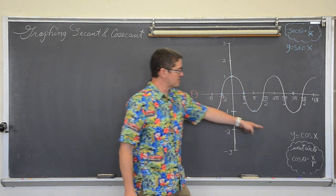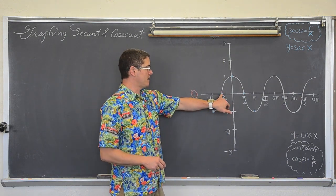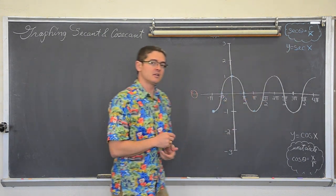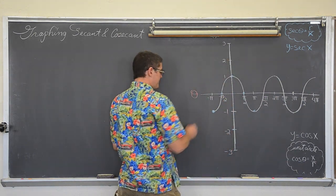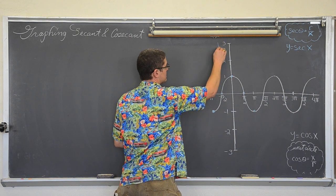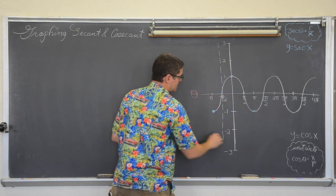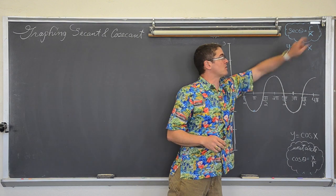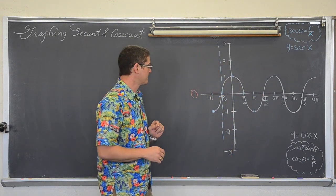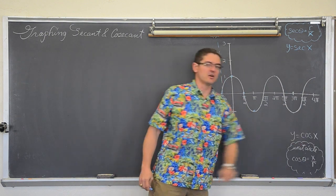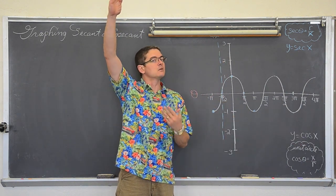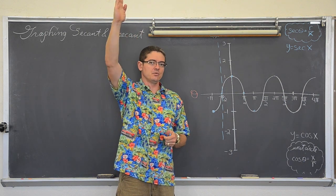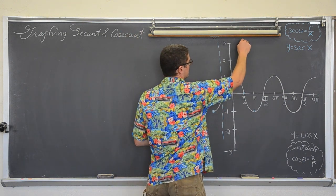There is no vertical shift here — this is the parent function y equals cosine of x. So any place where the cosine value is zero on the unit circle for secant is going to be undefined. That sets up an asymptote at negative pi over two. Again, if cosine is zero and you find the reciprocal for secant, you are doing one divided by zero, which is undefined. At pi over two the cosine function is zero, so the secant of pi over two is one over zero — undefined — setting up another vertical asymptote.